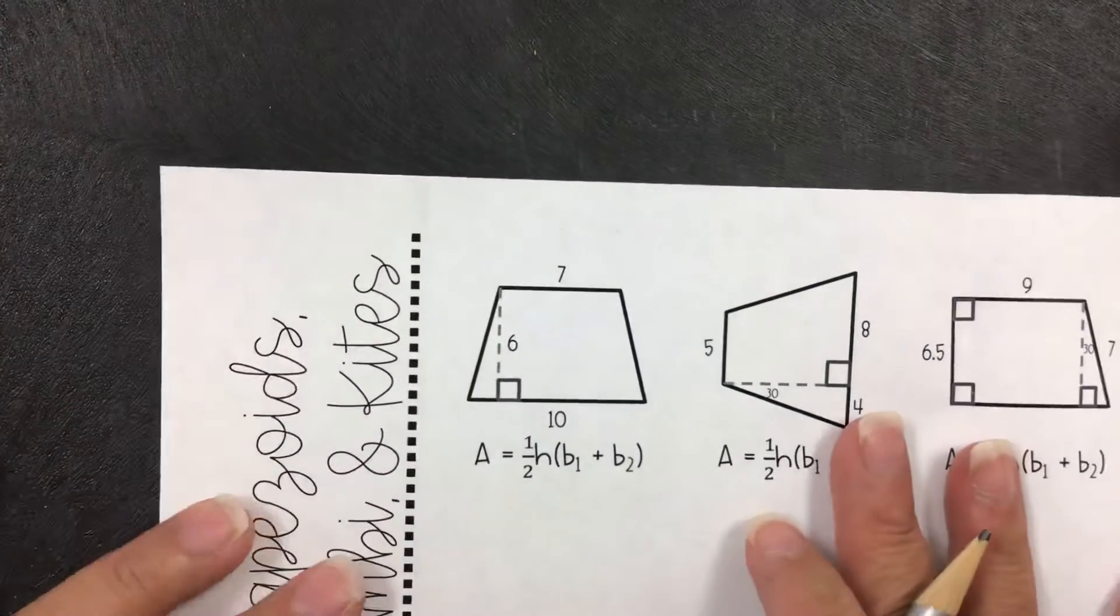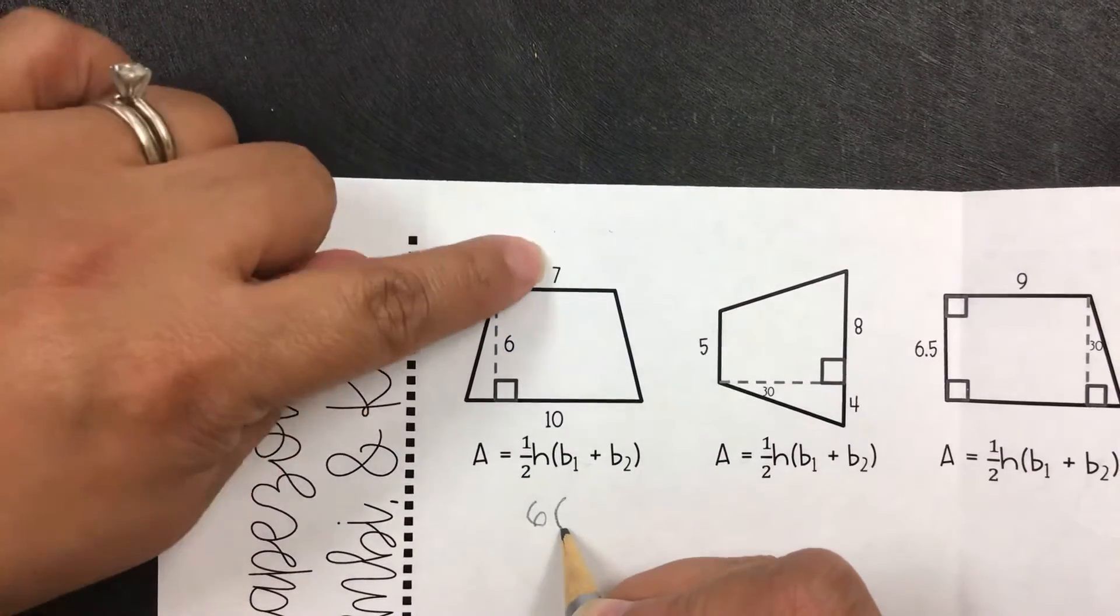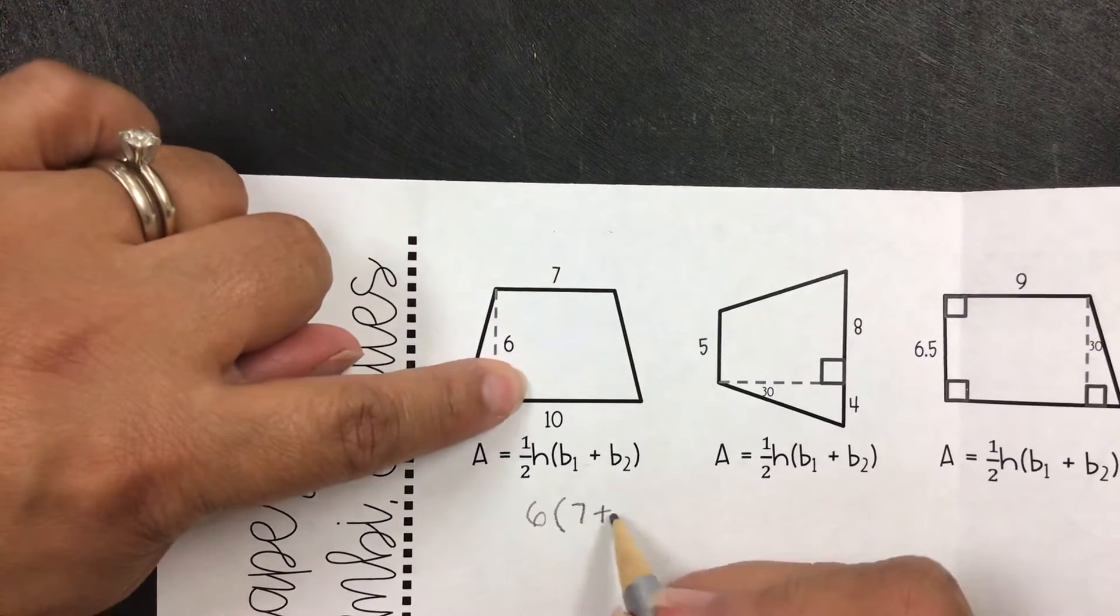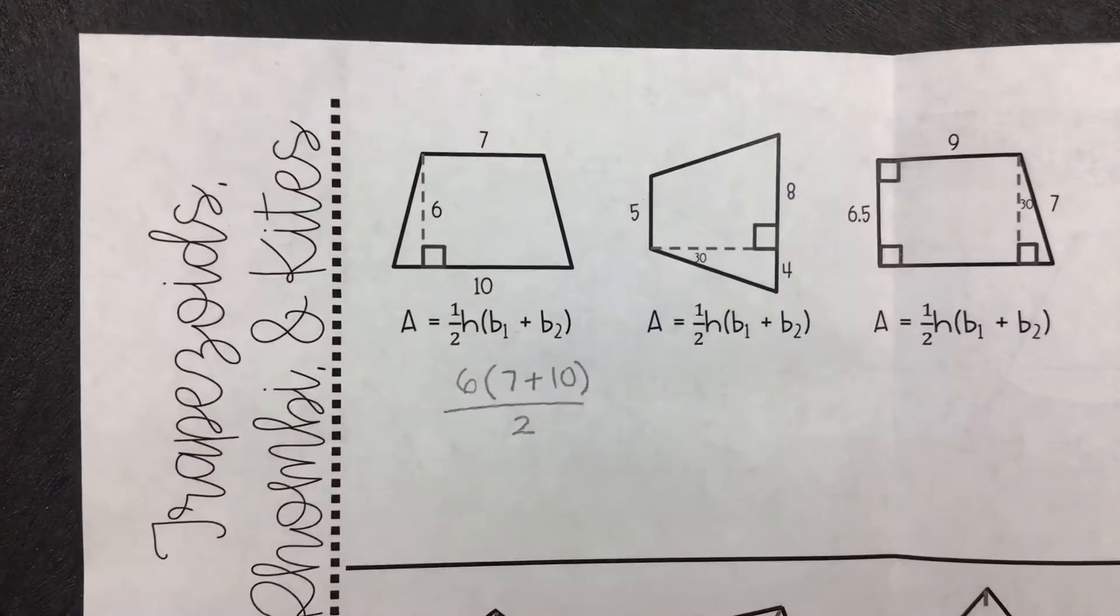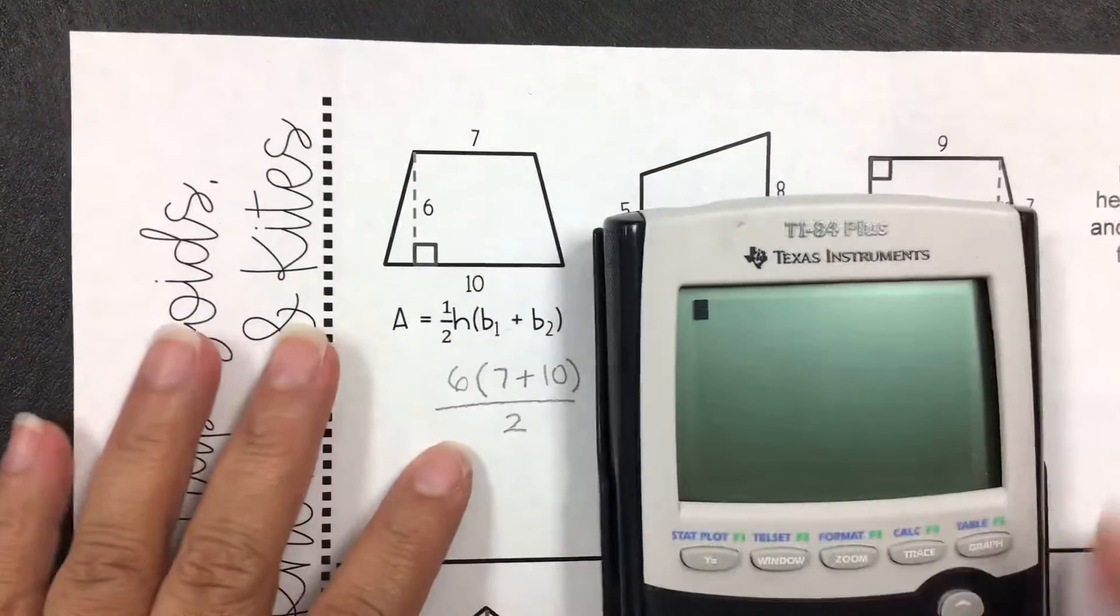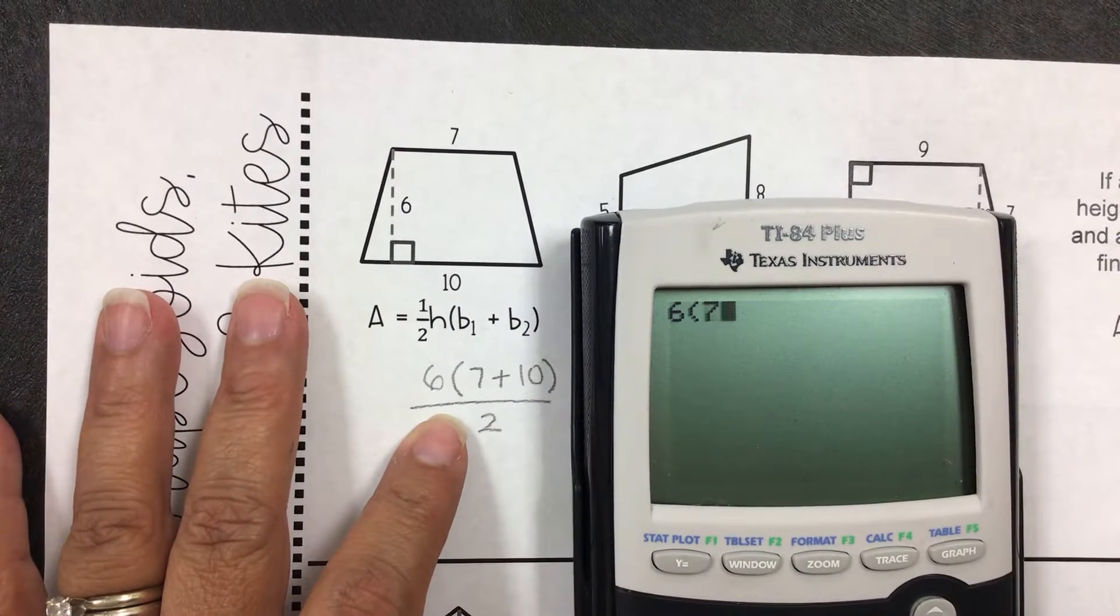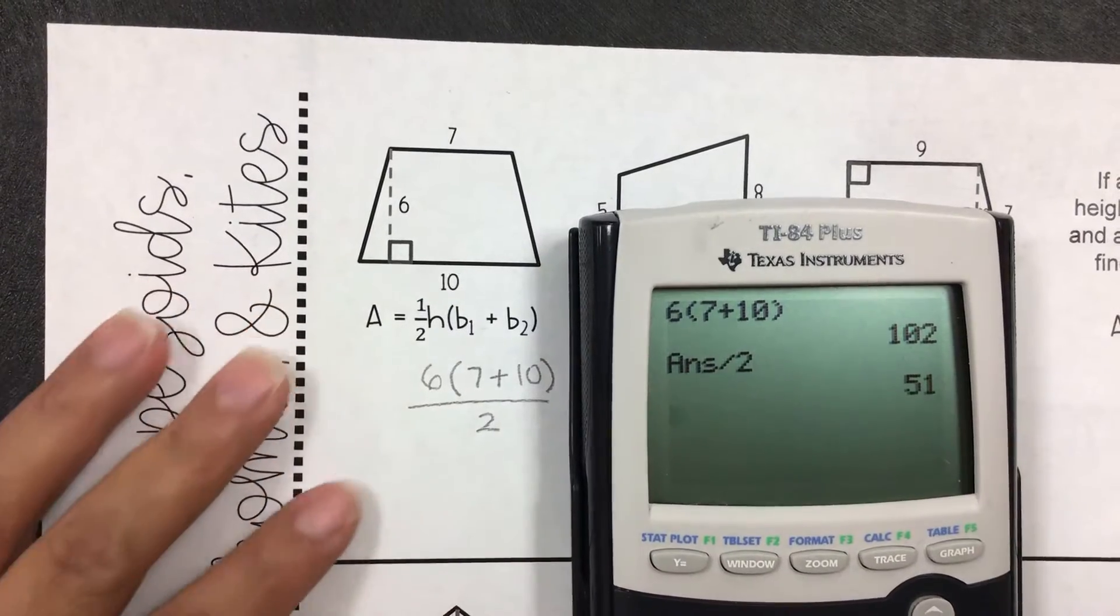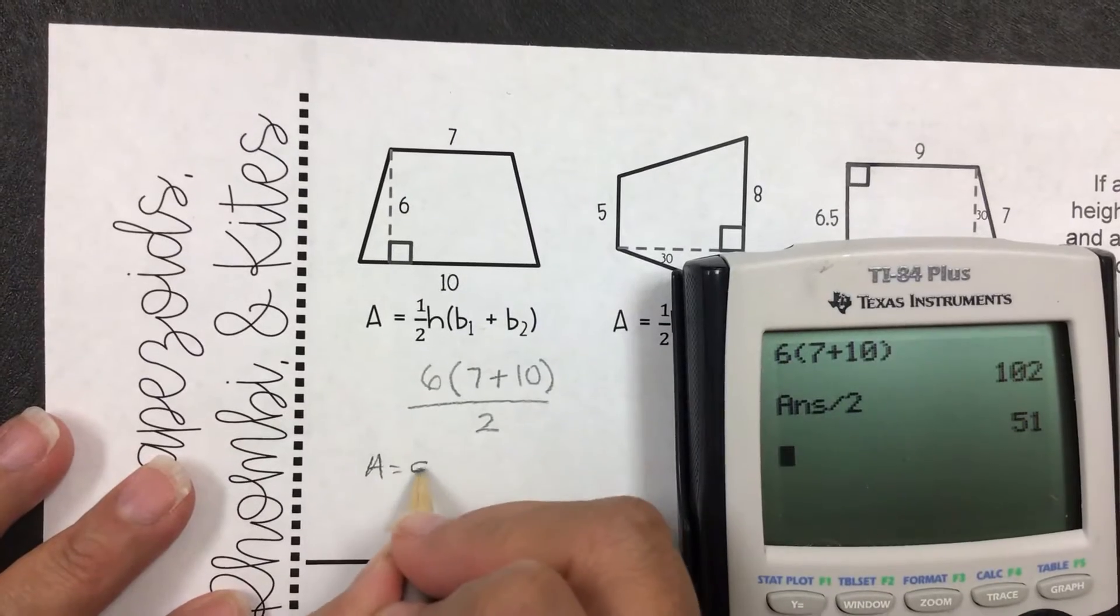Let's take a look. Here's the height. We're going to do 6 open parentheses. The base is 7 up here, plus 10 down here. And then we're going to divide it by 2. Since we don't have any variables, all we have to do is put it in the calculator. 6 open parentheses, 7 plus 10, close them, hit enter, then divide it by 2, just so the order of operations is correct. The area is equal to 51.